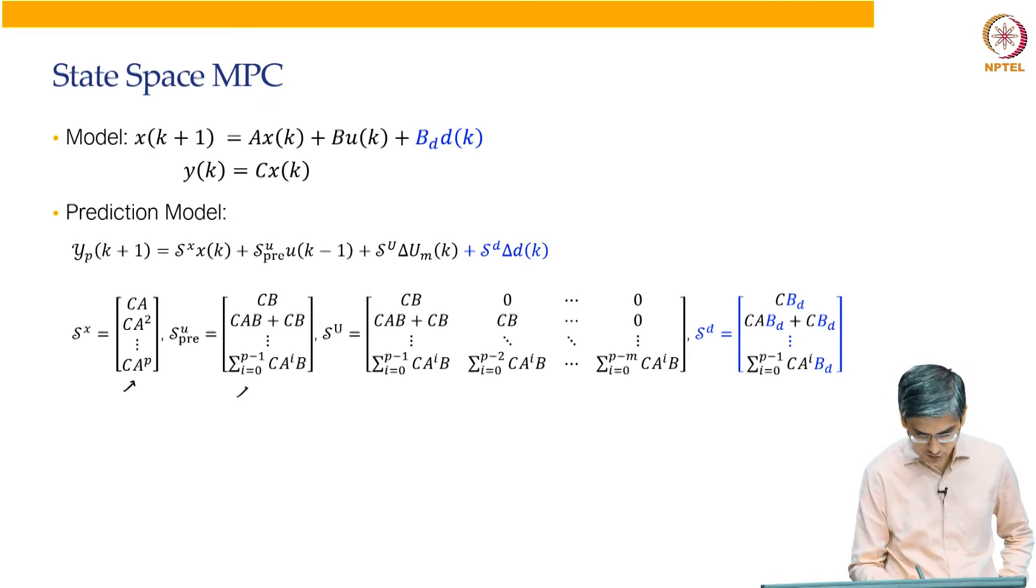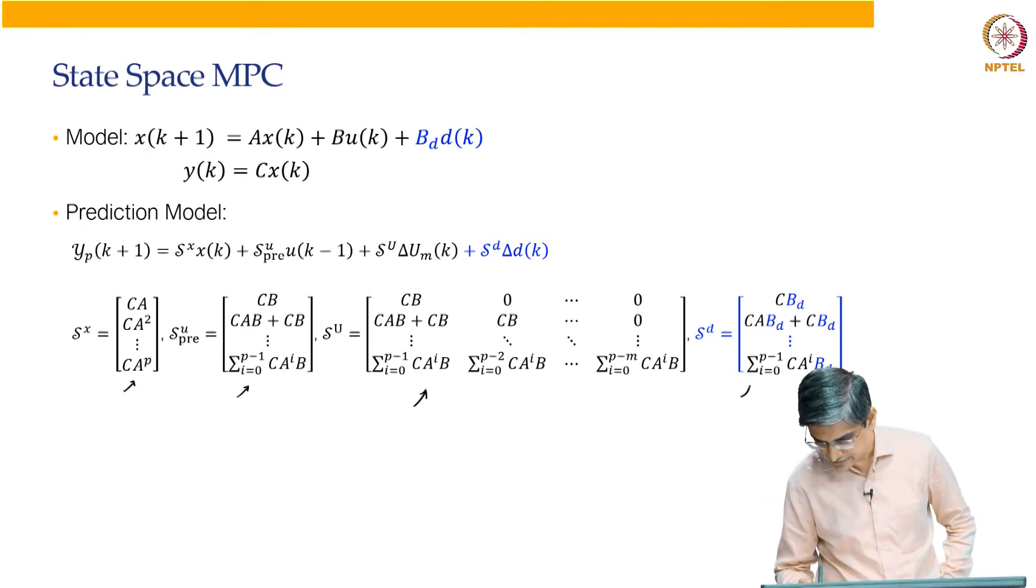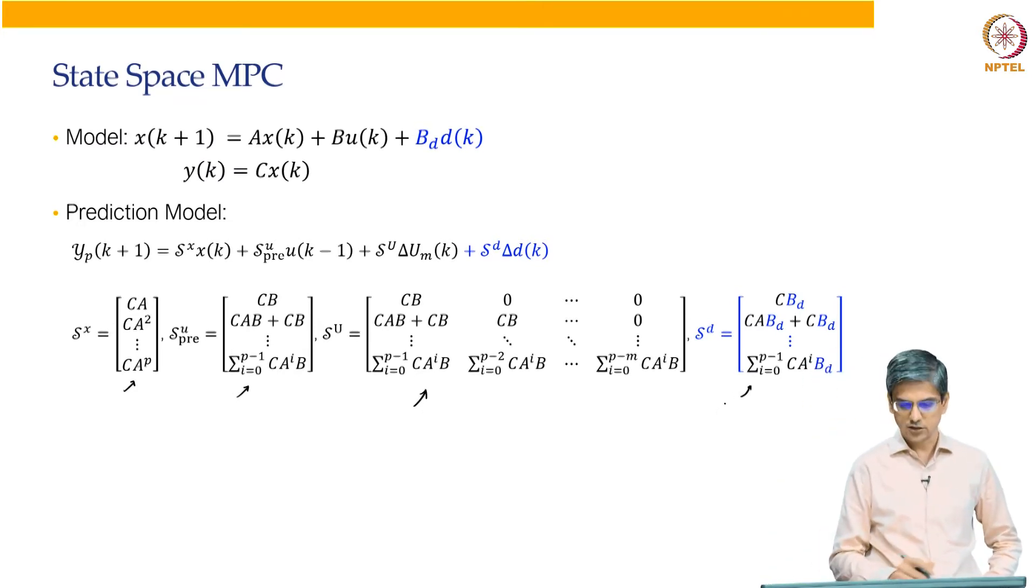Then we have Su pre which is given over here. Then we have our capital Su and finally we have our capital Sd. So, these are all the matrices that we have built for handling the case of ideal case as well as measured disturbances.